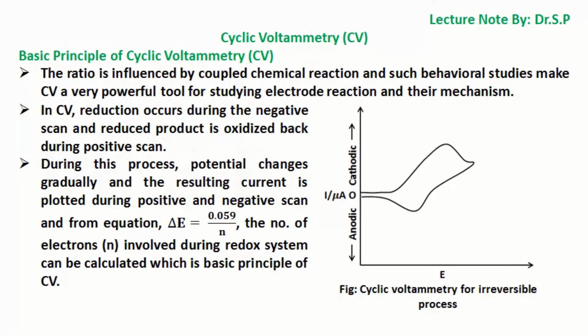In CV, reduction occurs during the negative scan and the reduced product is oxidized back during positive scan. During this process, potential changes gradually and the resulting current is plotted during positive and negative scans. From the equation delta E equals 0.059 by N, the number of electrons N involved during the redox system can be calculated, which is the basic principle of cyclic voltammetry CV.